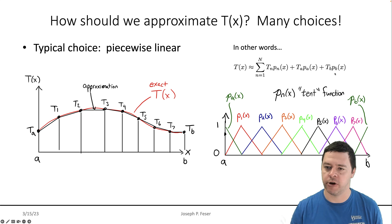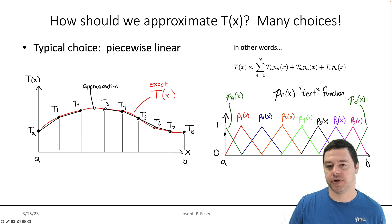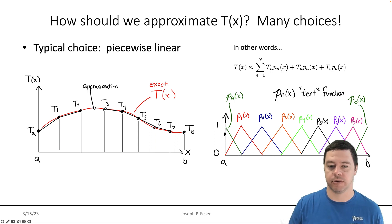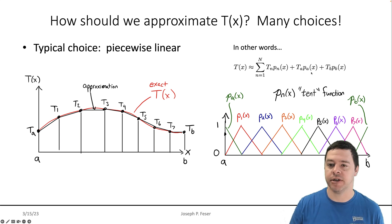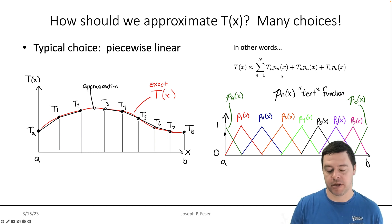We have to handle the edges a little bit differently. For example, if I want to include the fact that the temperature at the left edge is equal to TA, what I need is another special function that's 0 at all the other node locations but equal to 1 at the location of TA. I'll build a special type — like a half tent function — to handle the boundary conditions. In this scenario, I give you the temperature at A and the temperature at B, and then we are solving for the unknowns T of N. That's our goal.